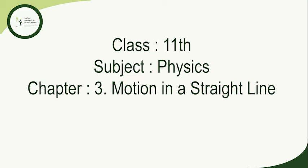What causes motion is described in the next chapter, which forms the subject matter of Chapter 5. Position, path length, and displacement: motion is change in position of an object with respect to time. In order to specify position, we need to use a reference point and a set of axes.